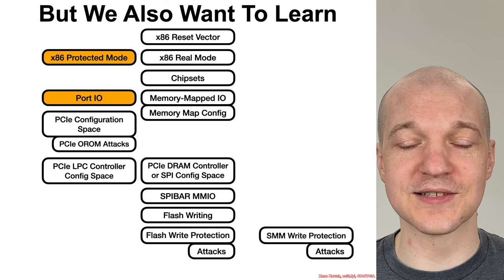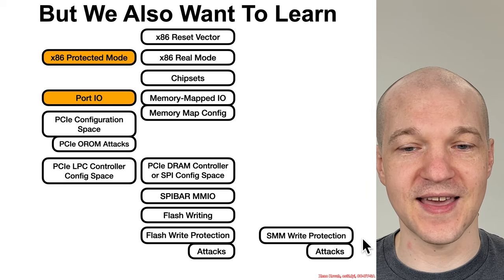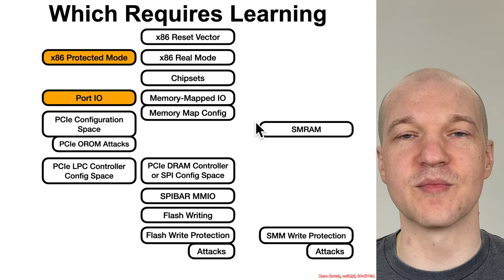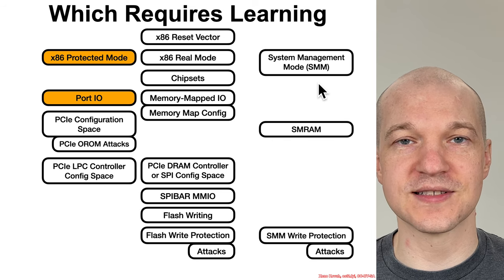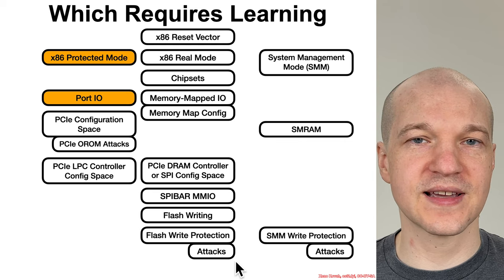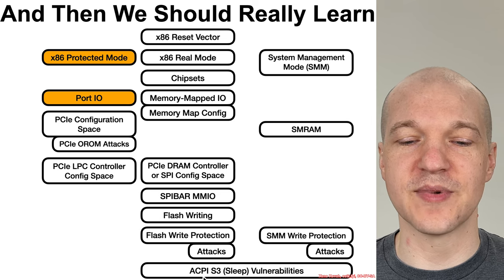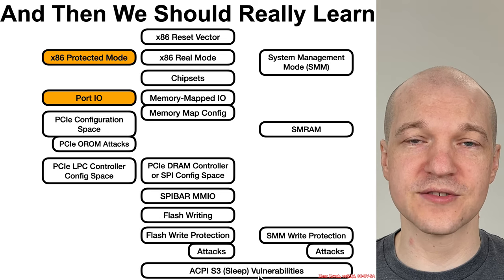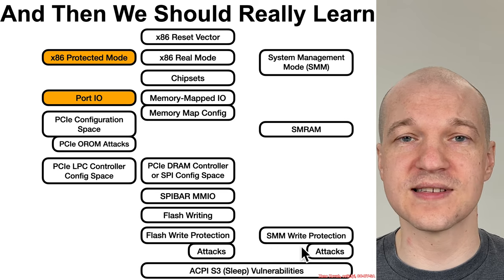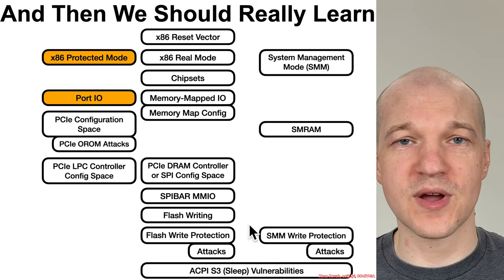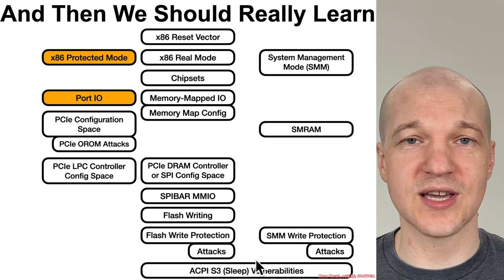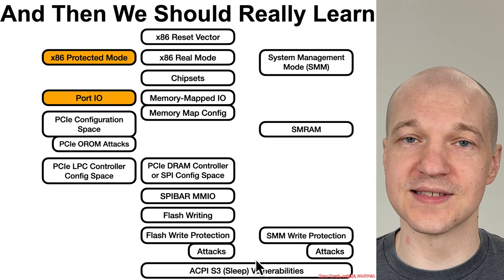We also want to learn about system management mode, write protection, and the attacks on that — which requires learning about system management RAM, which also requires knowledge of the memory mapped configuration, and learning about system management mode itself. After you learn all of that, and all the different write protection mechanisms and attacks, we also have to learn about ACPI S3, typically referred to as sleep — a lower power state of the processor — and how that can actually undercut the defenses against these attacks. So you've got write protection mechanisms, attacks against them, countermeasures, but then ACPI S3 sleep can come along and cause even further attacks.